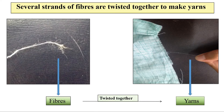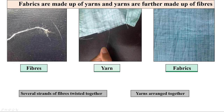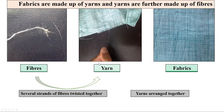In other words, fibers are twisted together to make yarns. So now we understand that fabrics are made up of yarns, and yarns are further made up of fibers. Several strands of fibers are twisted together to make yarns, and yarns are arranged together to make fabrics.